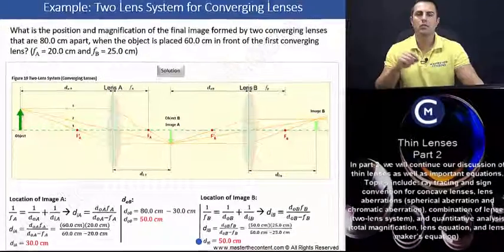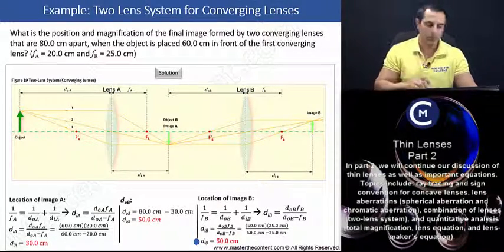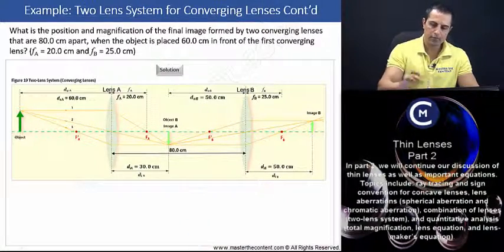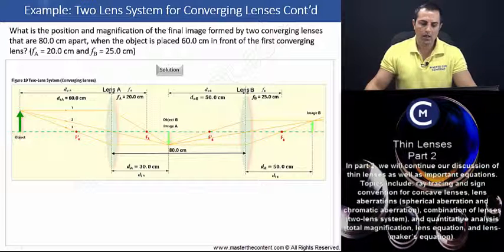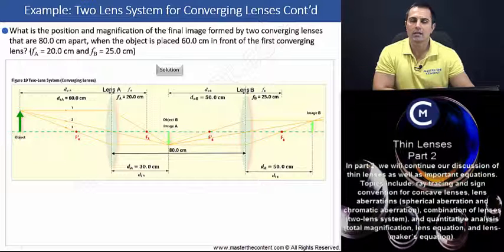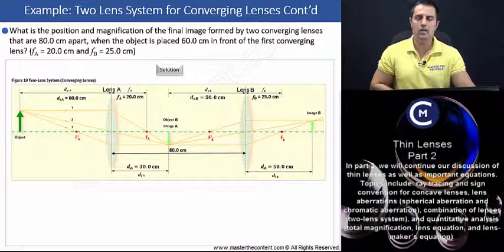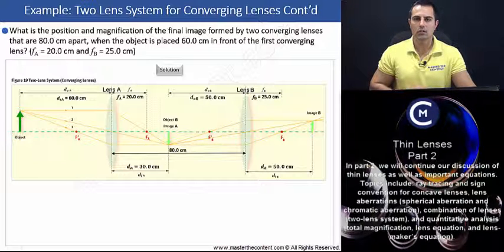Let's proceed to our next slide where we can find the total magnification of the system. Recall, the total magnification is going to be the product of the magnification produced in each lens. Thus, we'll first find the magnification in lens A and in lens B, and then we'll finish off by determining the total magnification of the system.